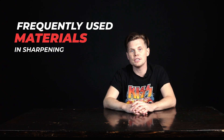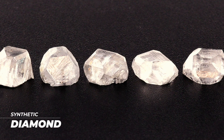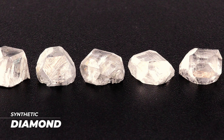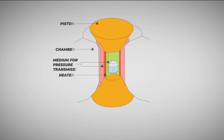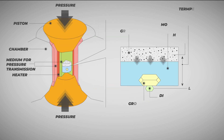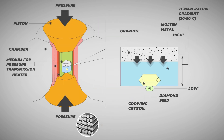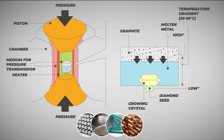Let's now proceed to the frequently used synthetic materials in sharpening. Artificial diamond is a cubic allotropic form of elementary carbon, which is synthesized under high pressure. It is used everywhere for processing of hard alloys, stone, glass, non-ferrous metals, and so on. This is one of the most popular abrasives.